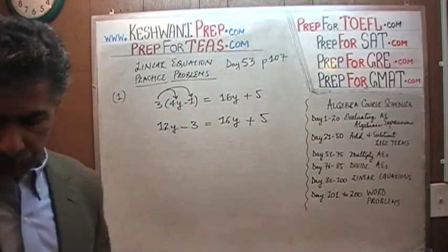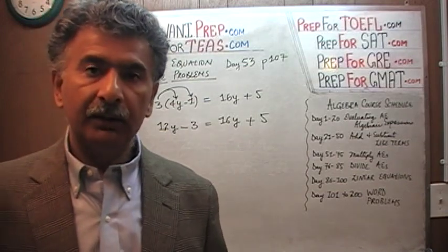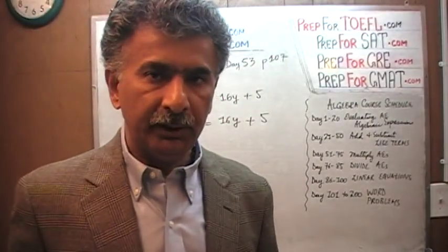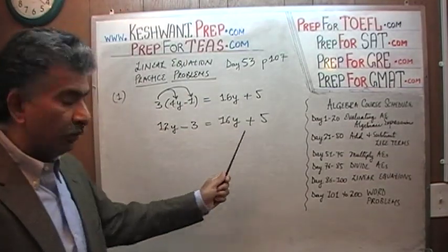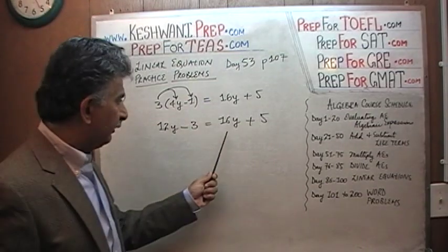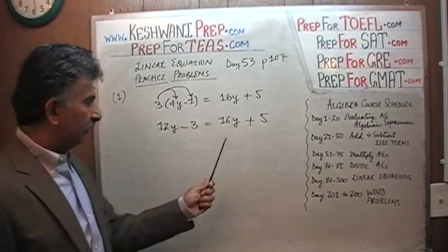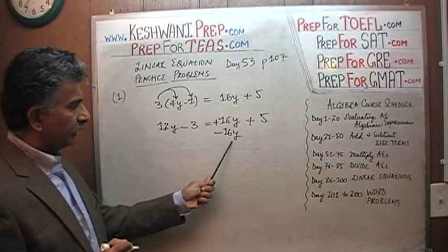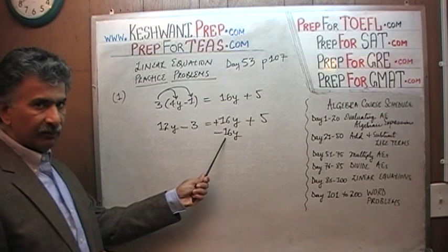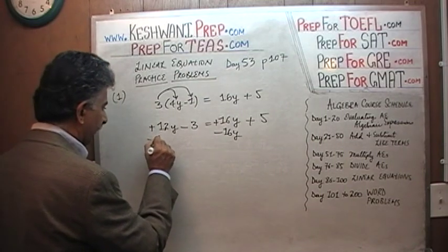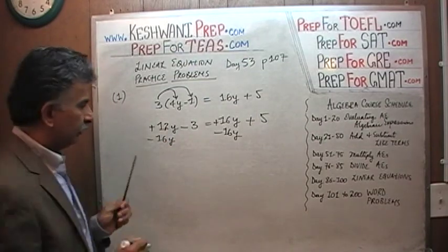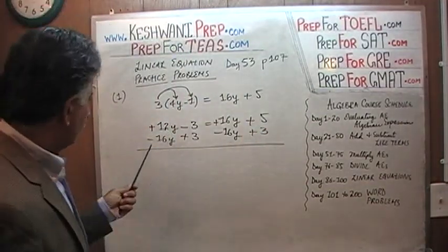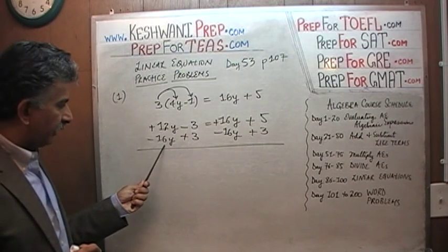Now listen carefully. The next thing we have to do is bring all the unknowns to one side and all the known quantities to the other side — conventionally, unknowns on the left and known quantities on the right. We bring 16y to this side by subtracting 16y from both sides. This positive 16y and negative 16y cancel each other out. Then we bring the negative 3 to the other side by adding 3 to both sides.